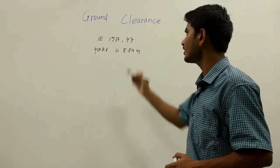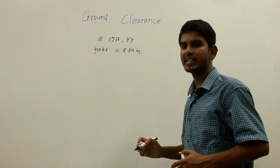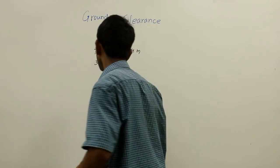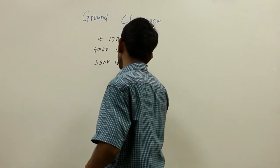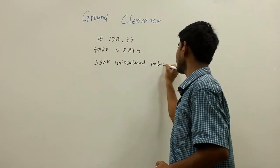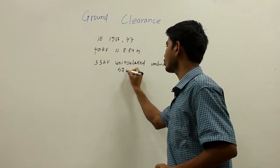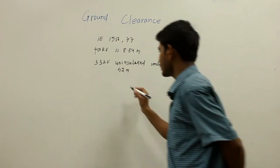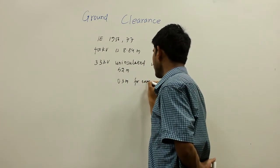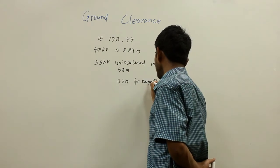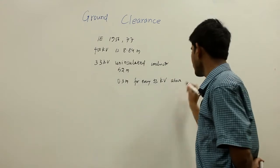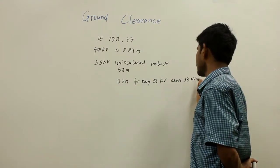Now, according to the same Indian Electricity Rules of 1956, Clause 77, the minimum ground clearance of a 33 kV uninsulated electrical conductor is 5.2 meters. And this clearance is increased by 0.3 meters for every 33 kV above 33 kV, we are going to increase the clearance by 0.3 meters.